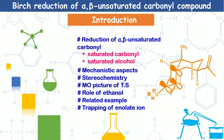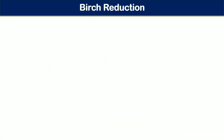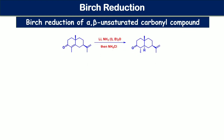Let us start the topic: Birch reduction of alpha-beta unsaturated carbonyl compounds. Here a specific example is taken to illustrate the whole chemistry of this reaction. In this example, ammonia typically acts as a proton source, and the most important feature of this transformation is selective reduction of the double bond in the presence of keto functionality.